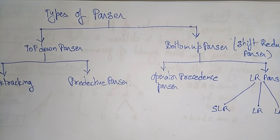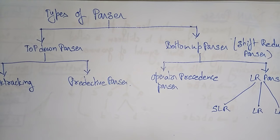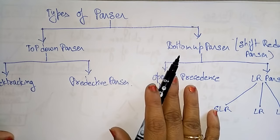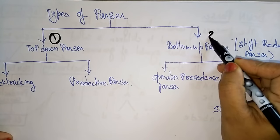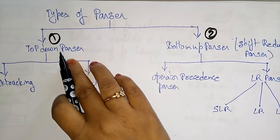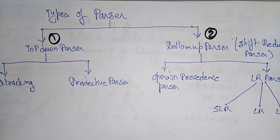Welcome back. Coming to the next topic in compiler design: types of parsers. This is one important concept you need to know. There are different types of parsers present, and in syntax analysis these parsers play a very important role. The two main types of parsers are the top-down parser and the bottom-up parser — top-down means scanned from top to bottom, and bottom-up means from bottom to top.